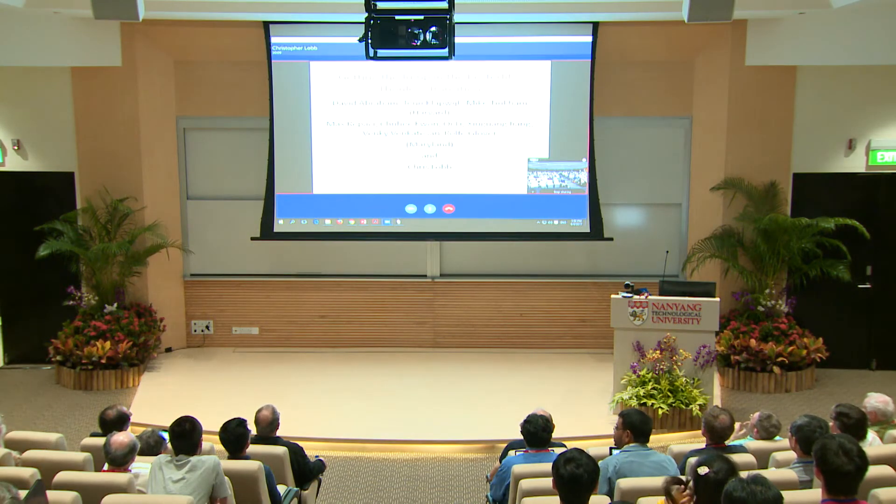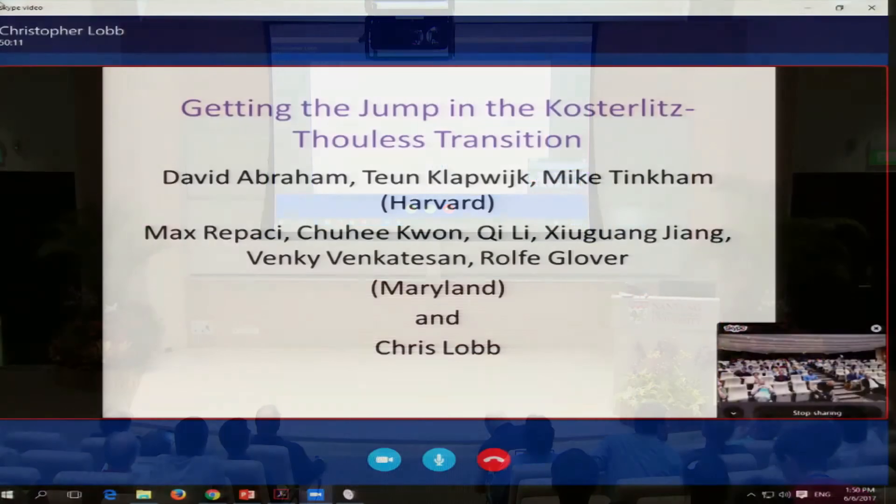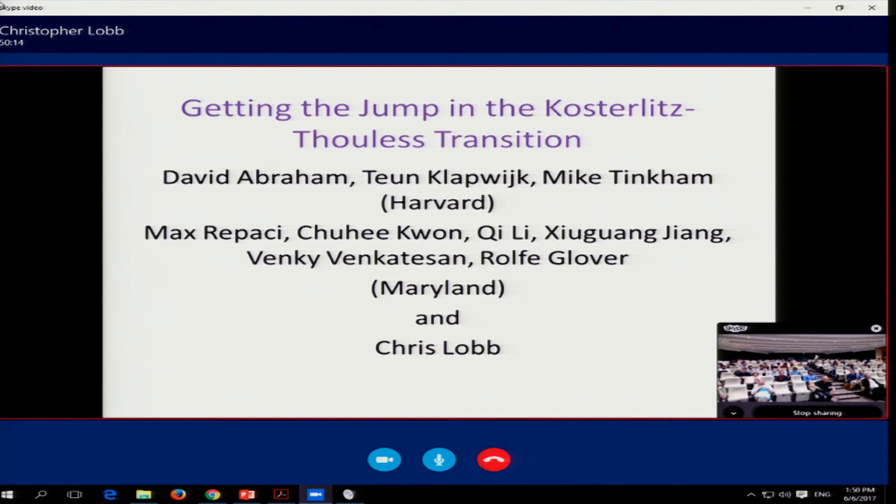All right, so I'm going to tell you today about two stages of work I've done on this. The first one was started when I was a postdoc at Harvard, and David Abraham was the graduate student who was in charge of this work. After moving to Maryland in the mid to late 90s, I looked into this problem again, the Kosterlitz-Thouless transition, with another excellent graduate student, Max Rapacci.